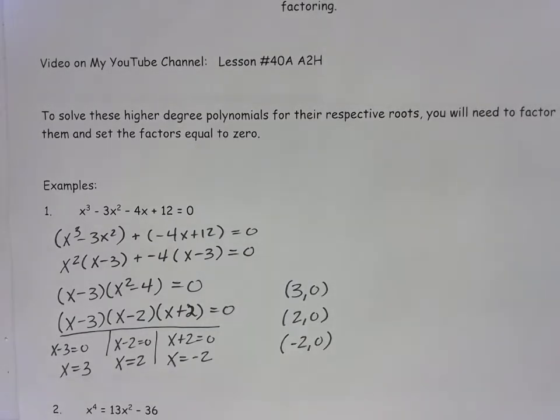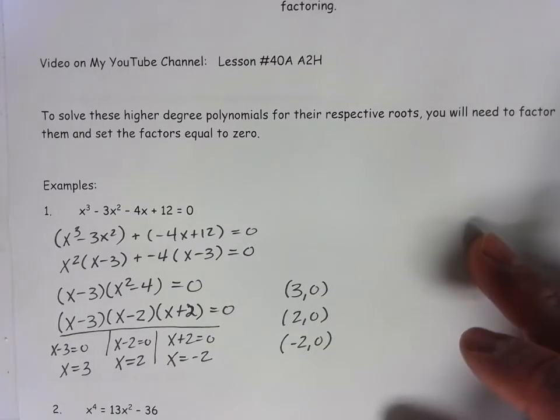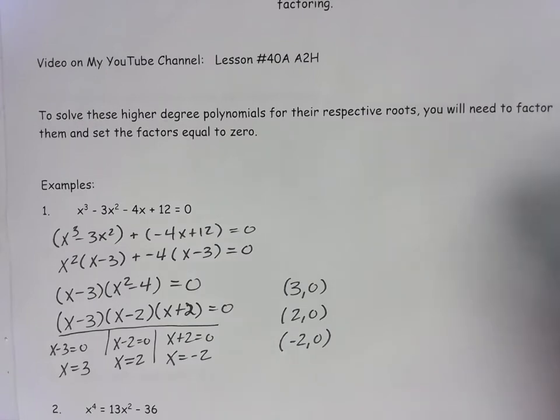So if this was being graphed, the roots of 3, 0, 2, 0, and negative 2, 0 would be where they intersect the x-axis, excuse me, would be where they intersect the x-axis when y equals 0.